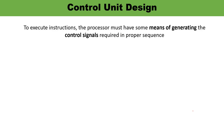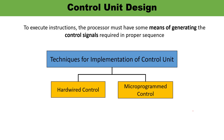When we talk about the control unit, we must also be aware of control unit design. When we talk about control signals, there must be a certain mechanism or process via which control signals can be generated. There are two techniques via which control signals can be generated: one is hardwired control and the other is microprogrammed control. In this video, I will be telling you in detail about the hardwired control unit.